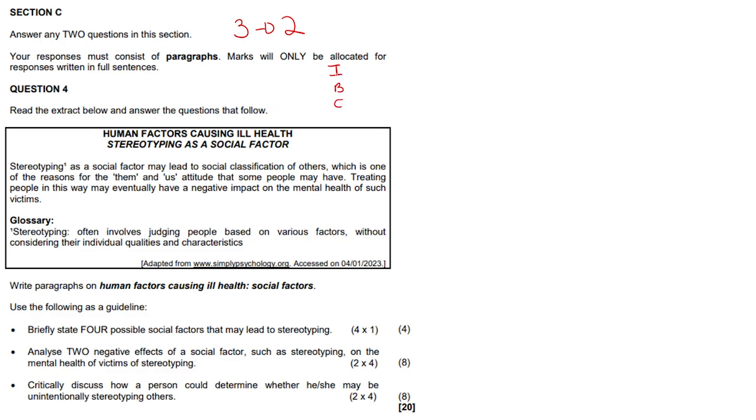It must follow the whole IBC method - introduction, body, and conclusion. Introduction: you introduce these three bullets. Your body actually answers the bullets and conclusion just ties everything together. Stereotyping as a social factor may lead to social classification of others, which is one of the reasons for the 'them and us' attitude that some people may have.